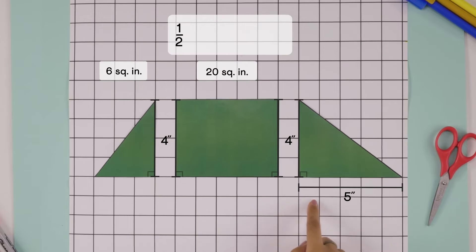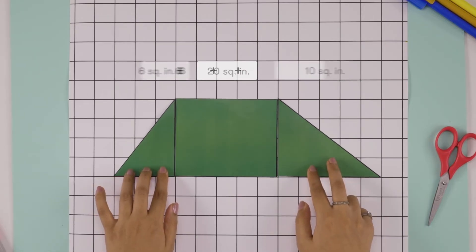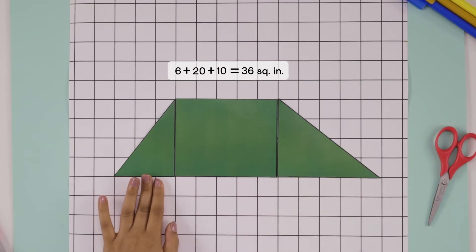And this triangle's area must be half times 5 times 4, i.e. 10 square inches. Now the trapezium's area must be their sum, i.e. 36 square inches.